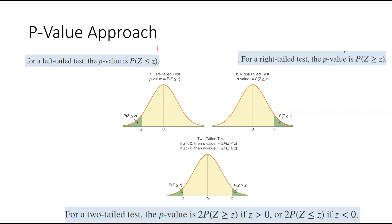In the p-value approach, if it's a left-tailed test — remember, we're looking at the alternative — we can just type it into Excel because that gives us the left side. But if it's a right-tailed test, then we're going to have to do 1 minus, because this is the opposite. And if it's a two-tailed test, it depends what our z-value is. If we're given the negative z-value, we would just do 2 times whatever we get. But if it's positive, we're going to have to do 2 times 1 minus, because it's to the right.